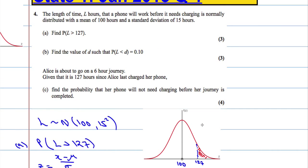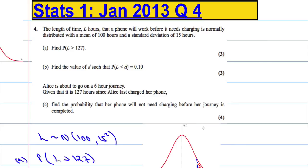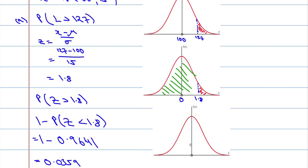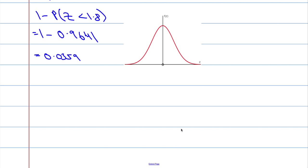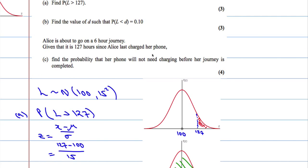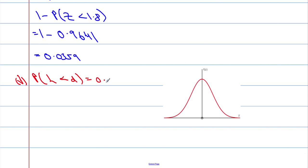Let's look at the next part of the question. Part B: find the value D such that the probability that L is less than D is 0.1. The default position is always to draw the picture. We want P(L < D) = 0.1, so we need to find some value D along the bottom such that the area beneath the curve is 0.1.